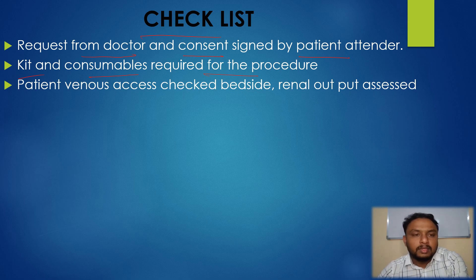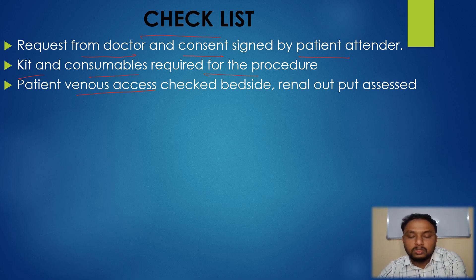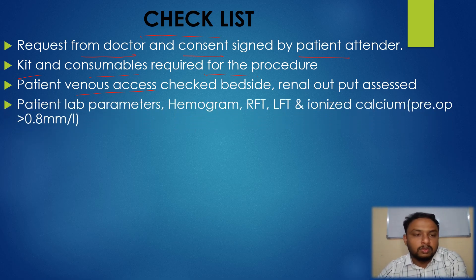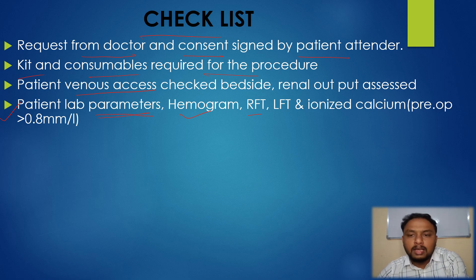Check patient venous access at the bedside, and renal output should also be assessed — whether output is present or not. Venous access must be confirmed before the procedure. Patient lab parameters are very important: you need hemogram, RFT, LFT, and ionized calcium — which pre-operatively should be more than 0.8 millimoles per liter.